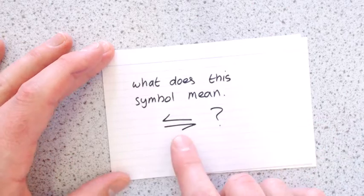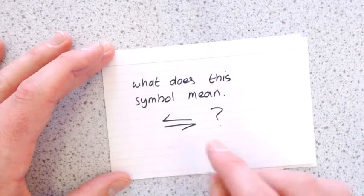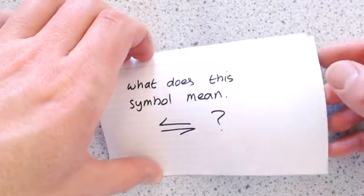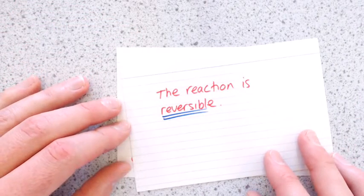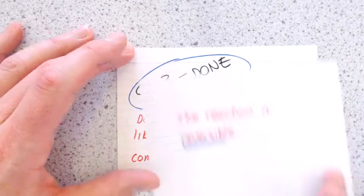What does this symbol mean? So a half arrow pointing this way, and a half arrow pointing that way. That means that a reaction is reversible.